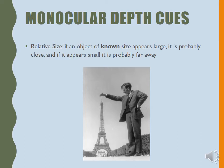Everyone everywhere has taken pictures holding up the Washington Monument or holding up the Leaning Tower of Pisa, or in this case, putting your hand over the Eiffel Tower. We all know that if that man is of average height — about 5'10" to 6' tall — the Eiffel Tower is far bigger than 6' tall. We understand that there's some play with the images here. We know the man must be closer and the Eiffel Tower must be further away, but at first glance, this is just messing with that monocular cue.